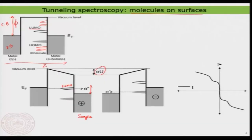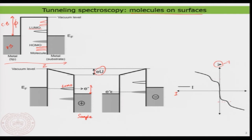Looking at the current versus voltage — I have voltage on the y-axis and current on the x-axis — when applying positive and negative bias at some particular energy, there is a small increase in current exactly due to tunneling through the molecular orbital. Taking the first derivative gives the tunneling spectrum, and you can clearly see that the peak positions represent the LUMO and the HOMO of the molecule — quite a representation of the interfacial electronic structure of the molecule-surface interface.